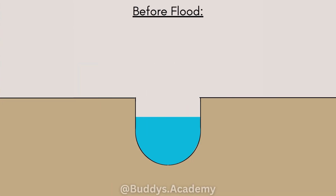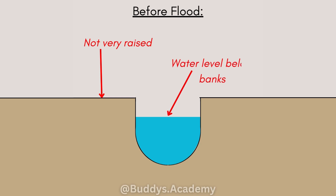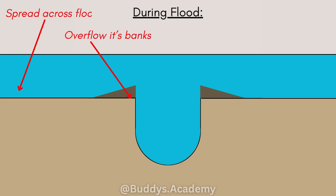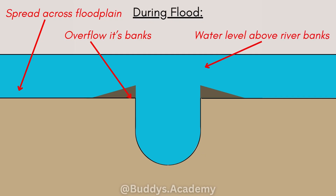So how do these natural levees actually form? If you take a look at our diagram, you can see that before the flood, our riverbanks are not going to be very raised and the level of the water is going to be well below your riverbanks. When a river floods it's going to overflow its banks and spread across the floodplain. In the next diagram, the water level is well above your riverbanks — that represents the phase during your flood.